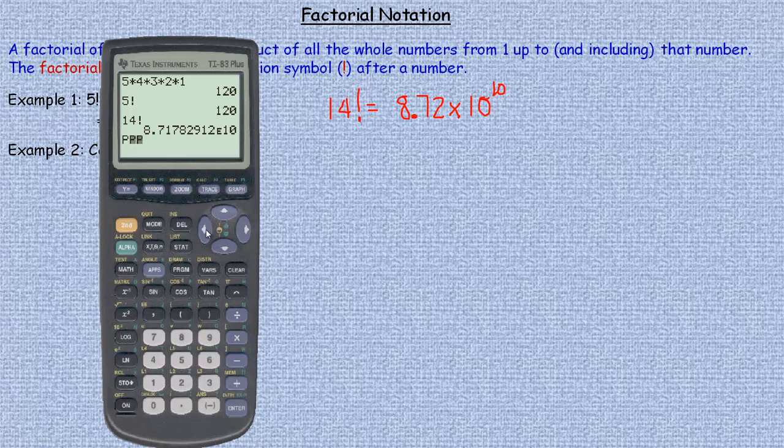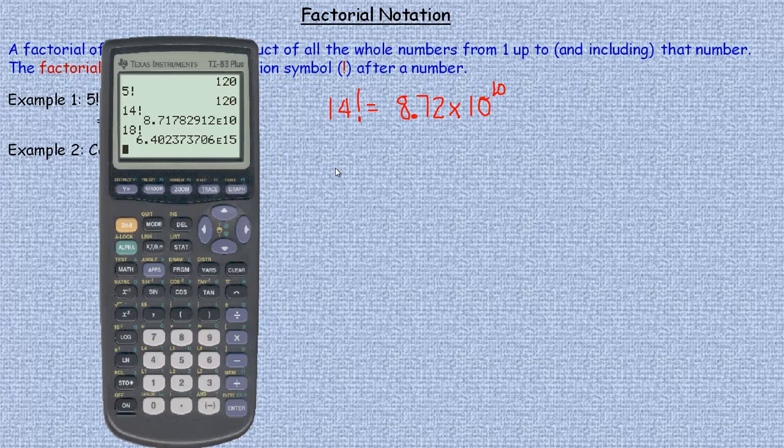If we had a bigger one like 18 factorial for example, that's 6.4 etc. times 10 to the power of 15. So in that case the exponent up here would be a 15.